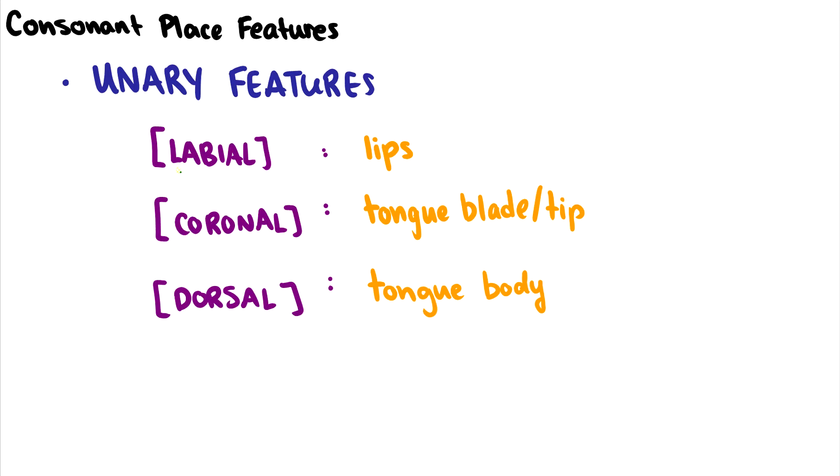But if a sound is labial, then we don't say it's minus coronal minus dorsal. We just say it is a labial sound. So you either include this in your feature matrix or you don't. Labial meaning lips, coronal meaning at the tongue blade or tongue tip, and dorsal meaning the tongue body. So in other words, the middle and back of your tongue.